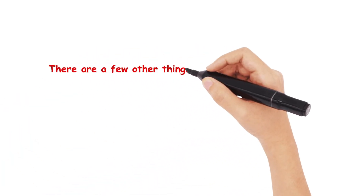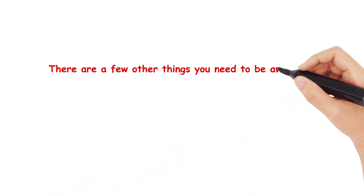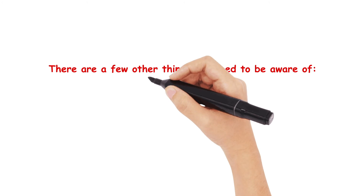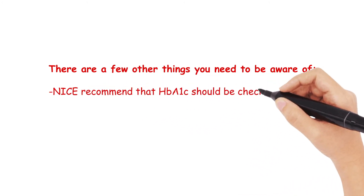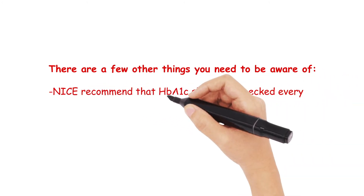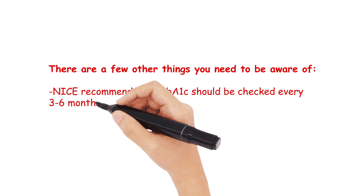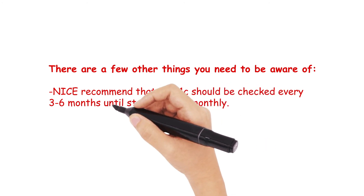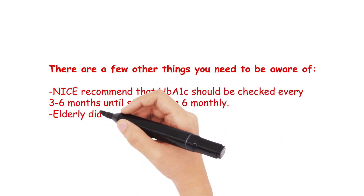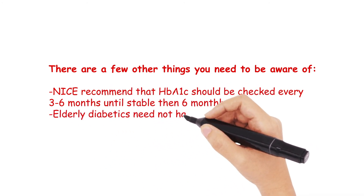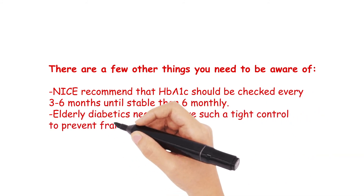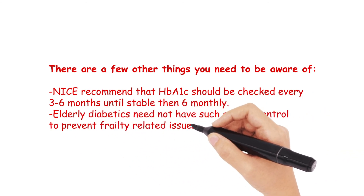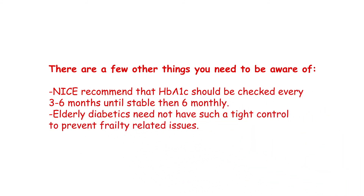There are a few other things to be aware of, particularly with monitoring diabetes. NICE recommends that HbA1c should be checked every three to six months until stable, and then every six months after that. Elderly patients, particularly if frail, don't actually need such tight control of their diabetes, as it could cause more harm than good.